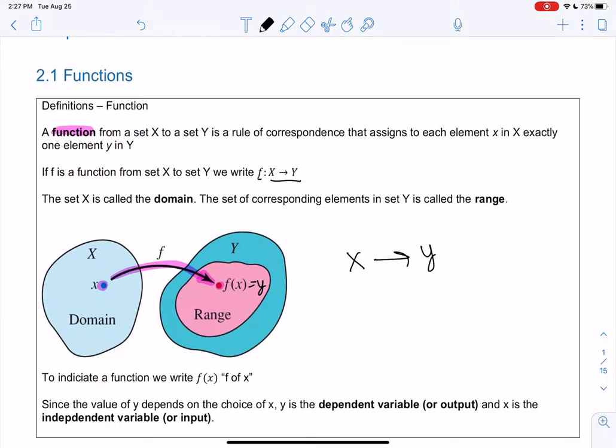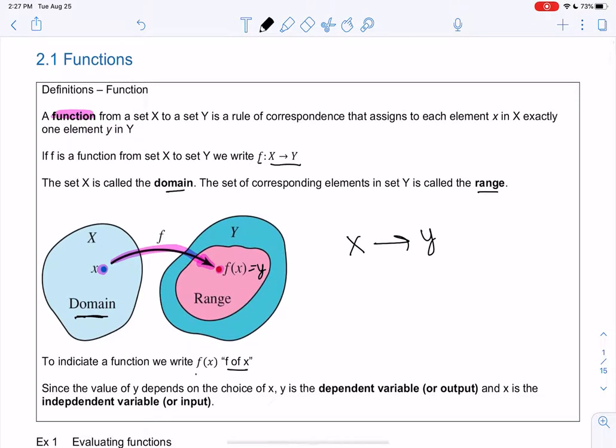We call the set x our domain, so we take things from the domain. We put this in the machine, the function's like a machine. It does something to x, and then it outputs it in y, which is the range. We read it f of x. It's not f times x, it's f of x.